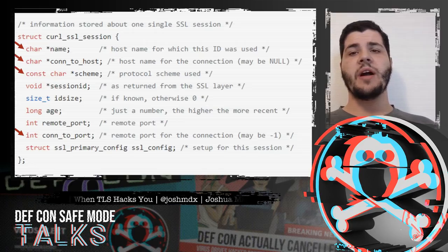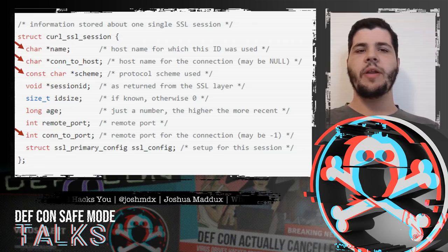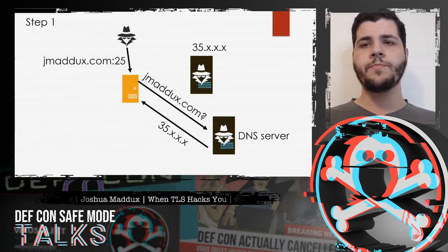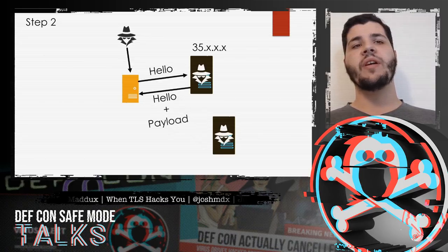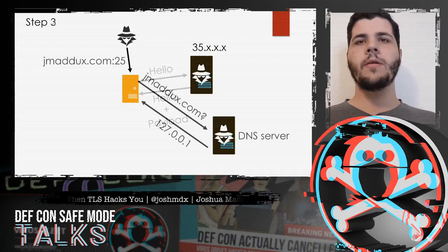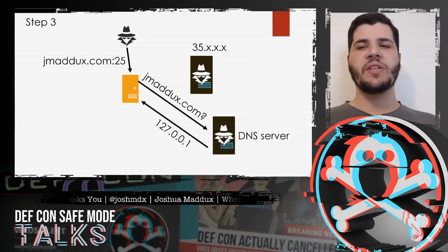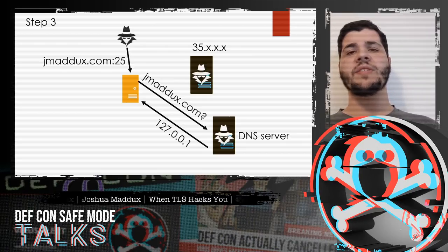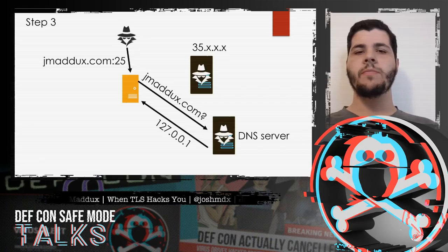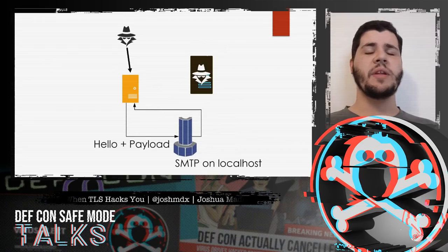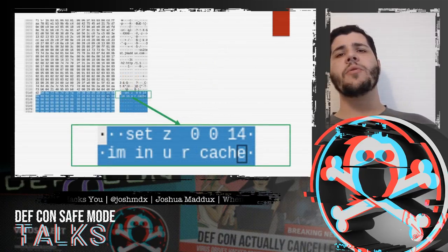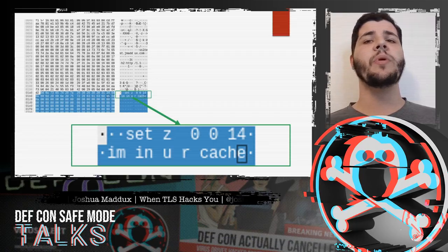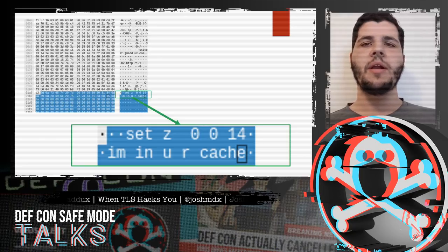So if you establish a TLS session with jmaddox.com, whether it resolves to something on the internet or your own machine, your HTTPS client will not know the difference. Since I as an attacker own jmaddox.com, I can combine all this TLS stuff with a concept called DNS rebinding. So I resolve the first request to 35.x.x.x, some server I control. Then the target server picks up the payload from 35.x.x.x in the form of a session ticket. After some time, I send the exact same URL, except the DNS entry has expired. Since I control the DNS server, this time around I resolve jmaddox.com to something internal — to simplify things, I'll just use localhost. Once the DNS query finishes, the target server then makes an internal request with that payload.